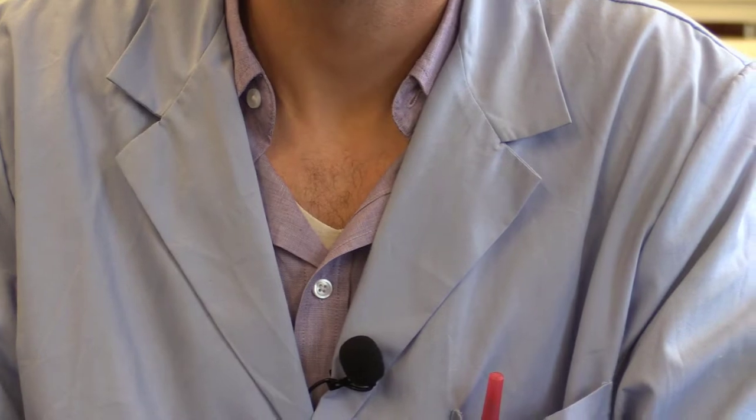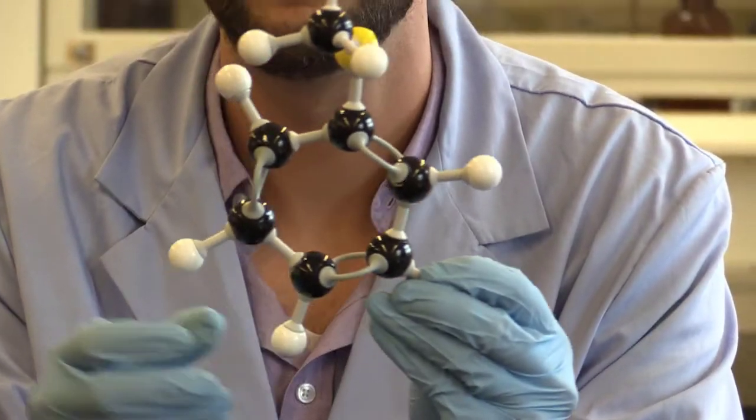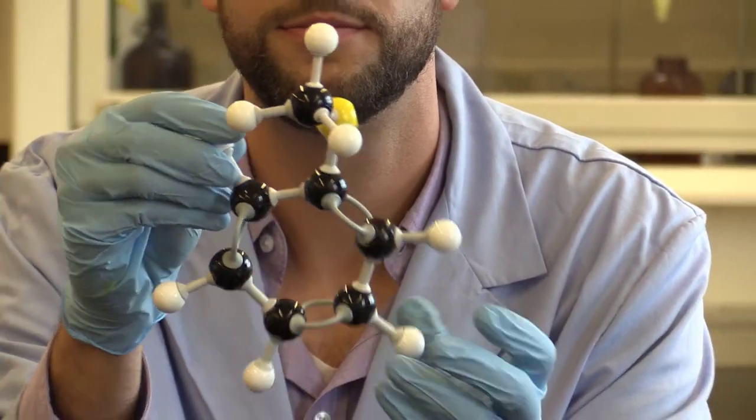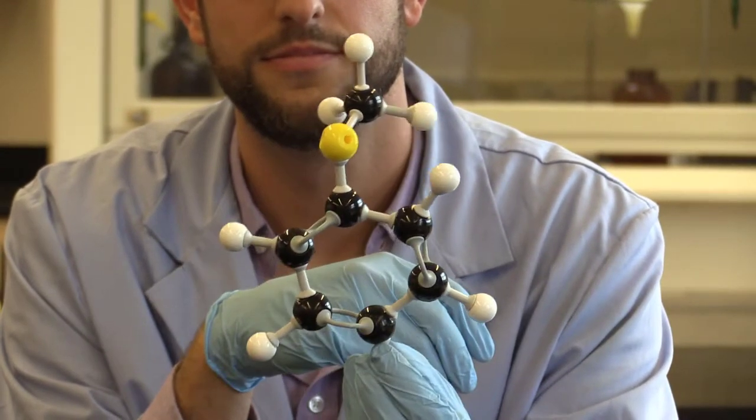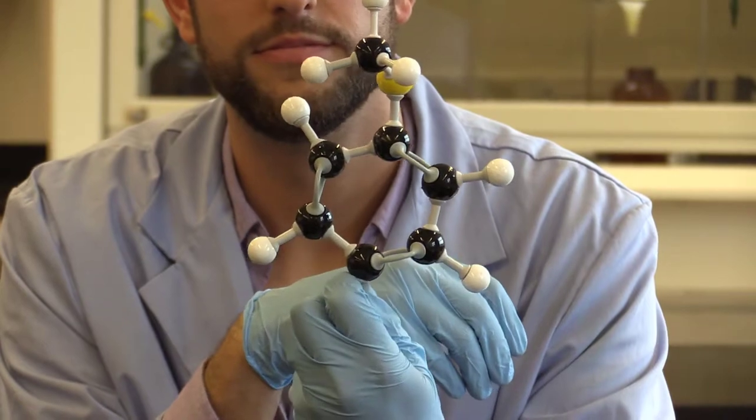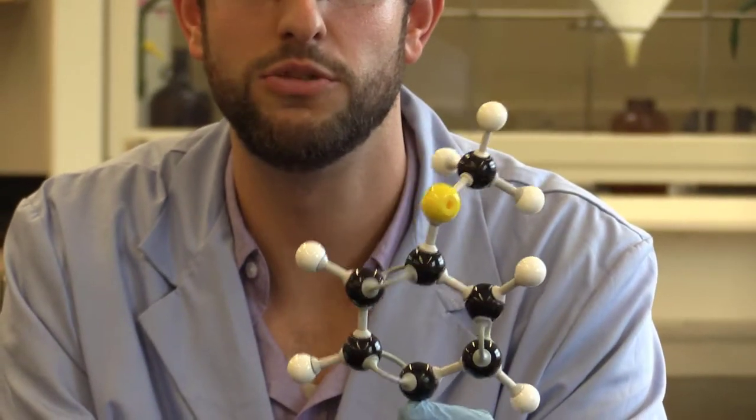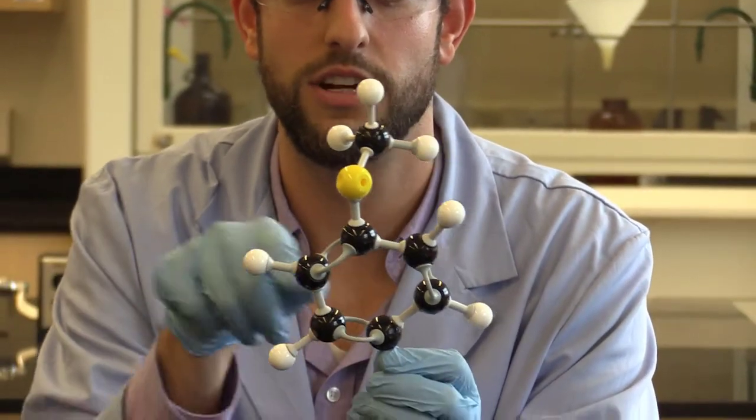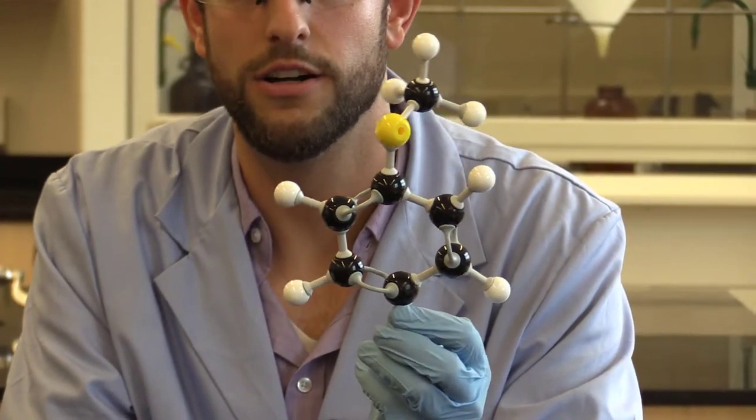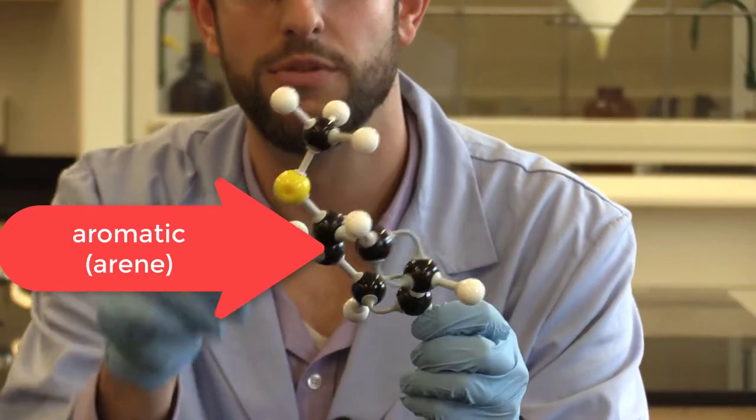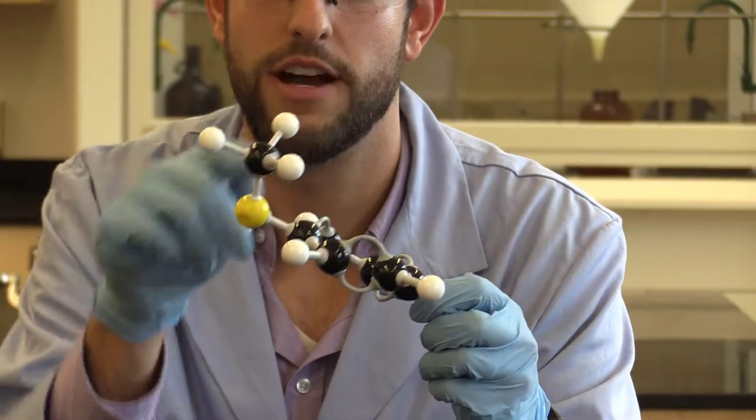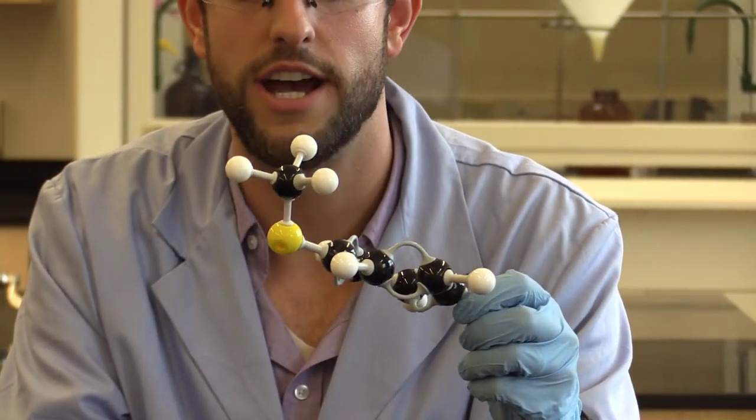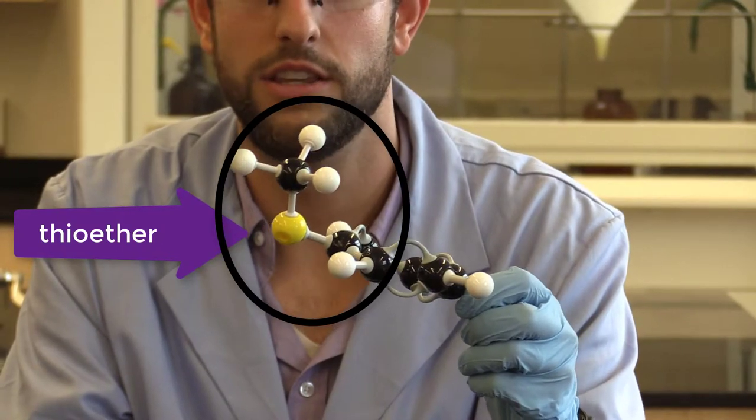Alright, this is our fourth structure. If you see two functional groups here, you would be correct. The benzene ring here is our aromatic ring. And then we have our yellow guy here is our sulfur. So then we have our sulfur functional group, which is our thioether.